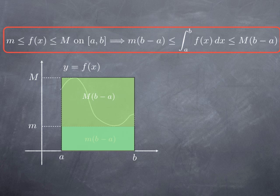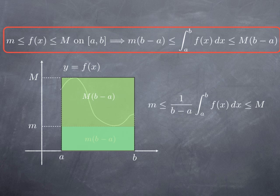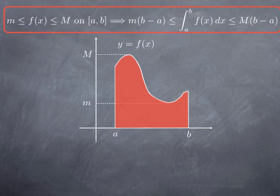Now, note that if we divide everything by (b minus a) — in the situation where b is greater than a and therefore (b minus a) is positive — we obtain that m is less than or equal to 1 over (b minus a) times the integral, less than or equal to M. So here is the area under the graph. All these considerations could be done for a general f, but it's easier to interpret in the case of a continuous positive function. This red area is simply the integral of the function, sitting between the two rectangles.